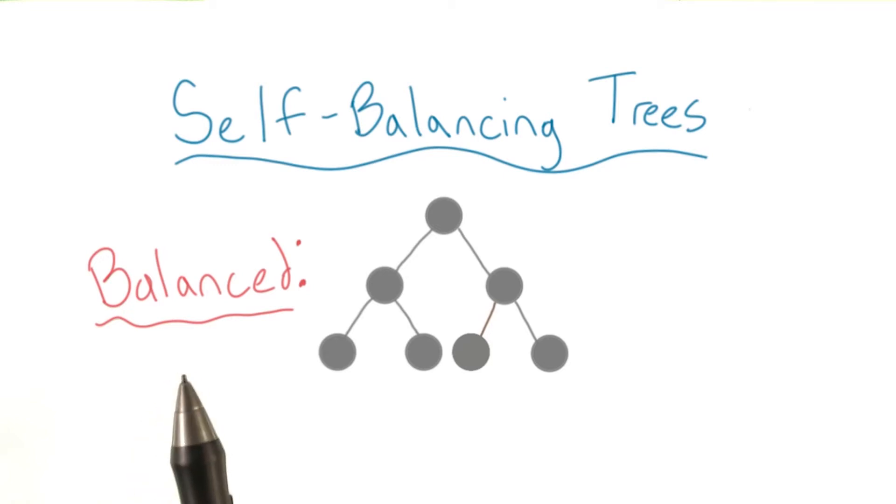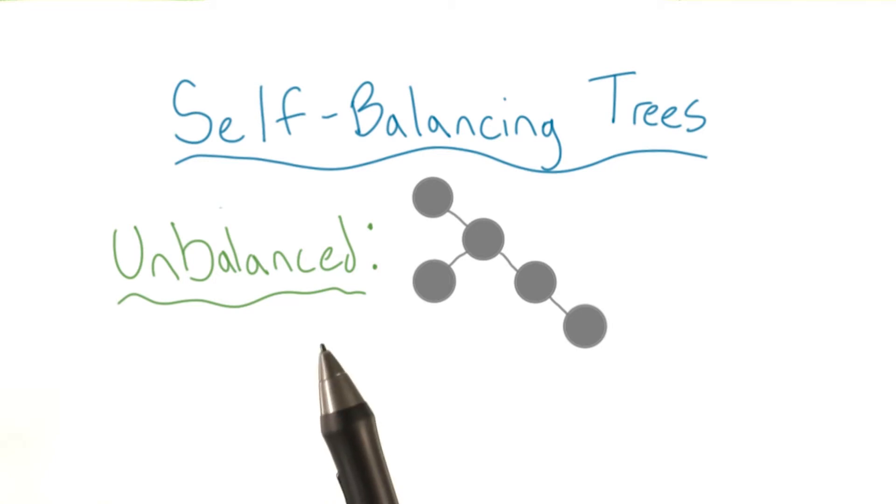In the tree world, a balanced tree has nodes condensed to only a few levels, while an unbalanced tree has nodes spread out among many levels.